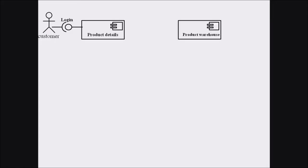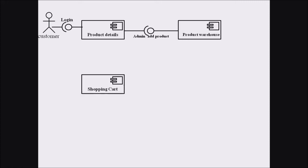Now we move to another component termed product warehouse. Product warehouse and the product detail component have a relationship — there exists an interface between them. Product warehouse is providing the interface towards product detail. The interface relation is admin adding products towards the warehouse, and from this warehouse database these details are reflected in the product detail website.